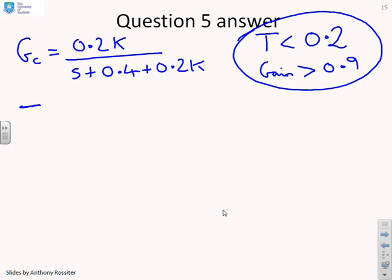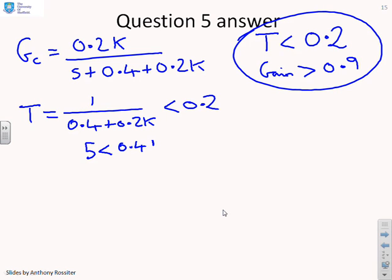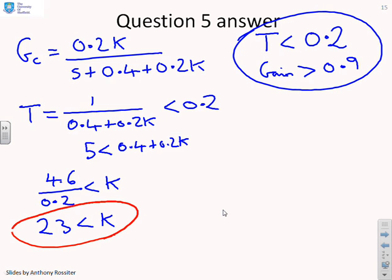So let's start with the time constant. And t equals 1 over 0.4 plus 0.2 k. And we want this to be less than 0.2. So I can rearrange this to write 5 is less than 0.4 plus 0.2 k. Or what does that give me? 4.6 over 0.2 is less than k. Or finally, 23 less than k. So in order to meet the time constant requirement, I need k to be bigger than 23.